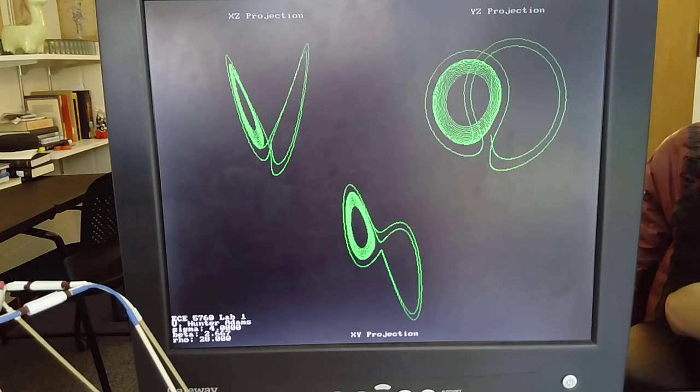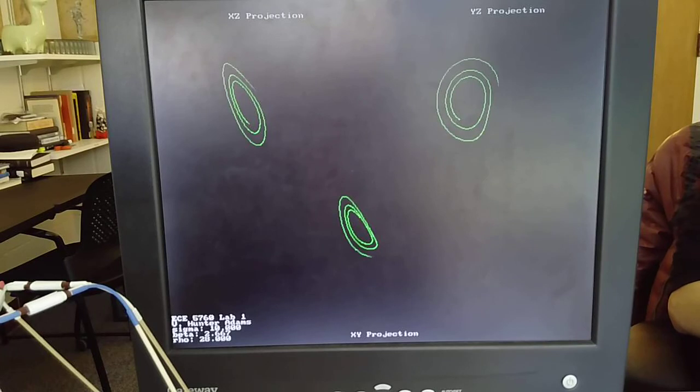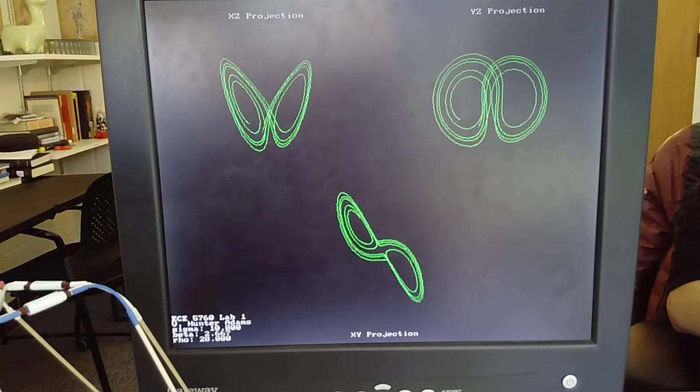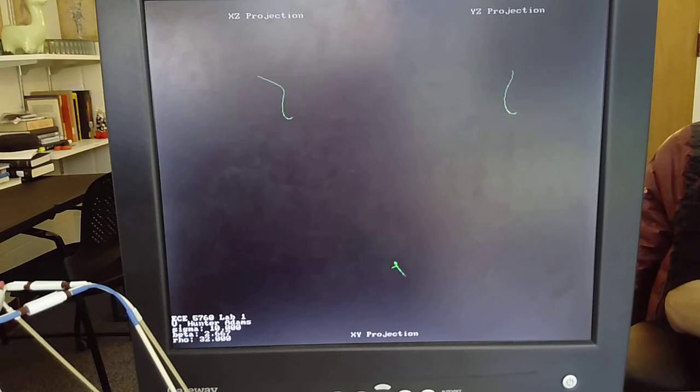Let me put sigma back to 10. I'll now change the value of rho from 28 to say 32, and this is now converging on a stable point.